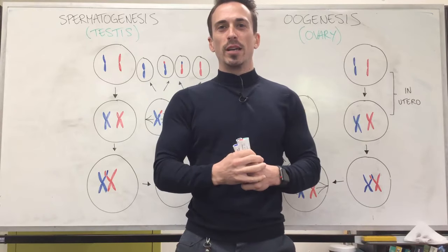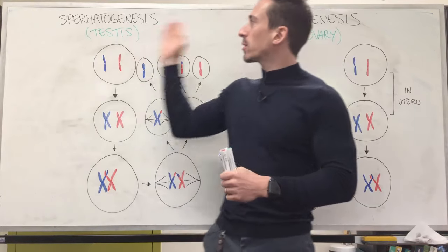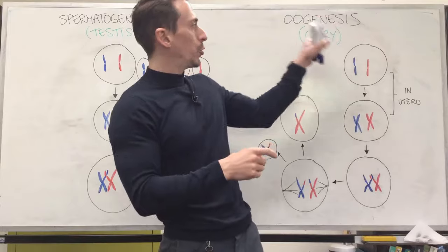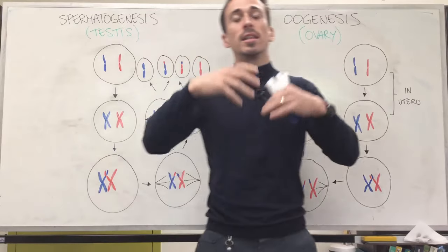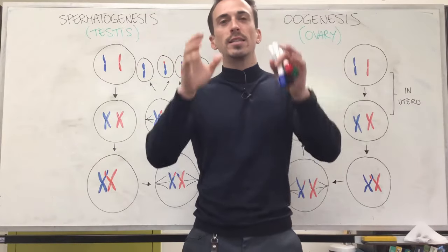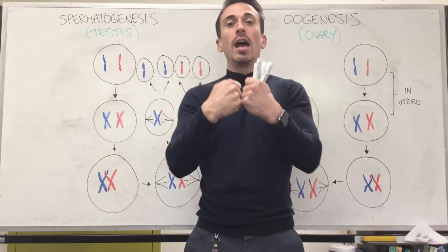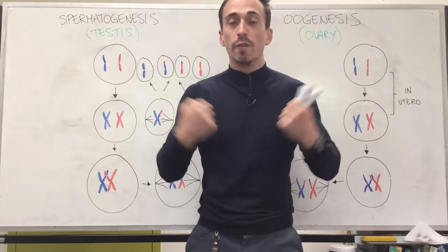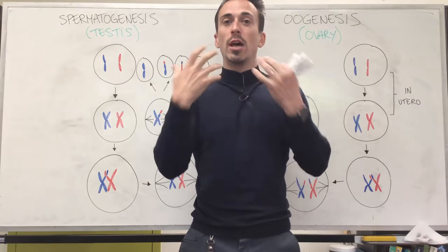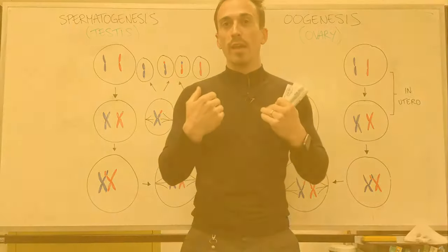Hi everybody, Dr. Mike here. In this video we're going to take a look at something called spermatogenesis and something called oogenesis. This is the production of gametes — sex cells that can come together, fertilize one another to produce an offspring, you or I.